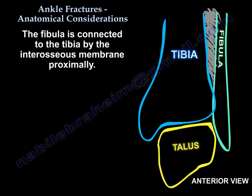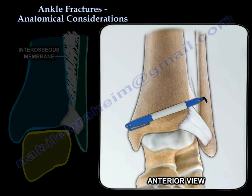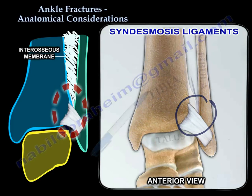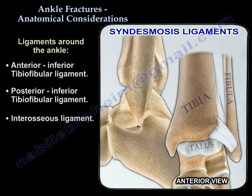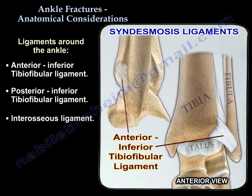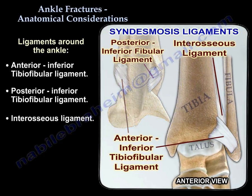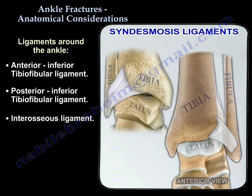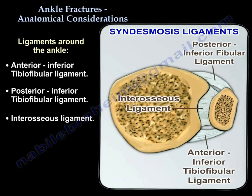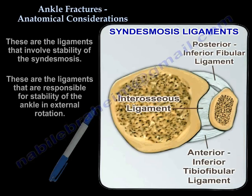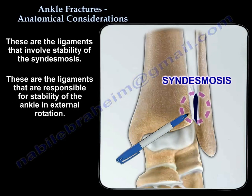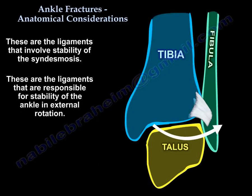The fibula is connected to the tibia through the interosseous membrane proximally. Around the ankle, you have ligaments: the anterior inferior tibiofibular ligament, the posterior inferior tibiofibular ligament, and the interosseous ligament. These are the ligaments that provide stability of the syndesmosis.